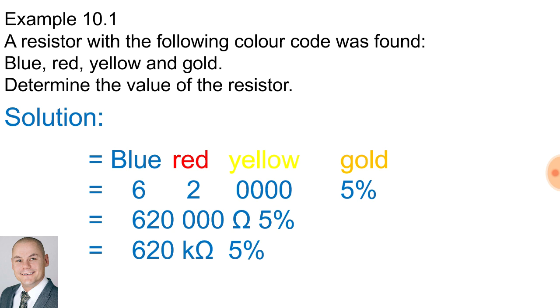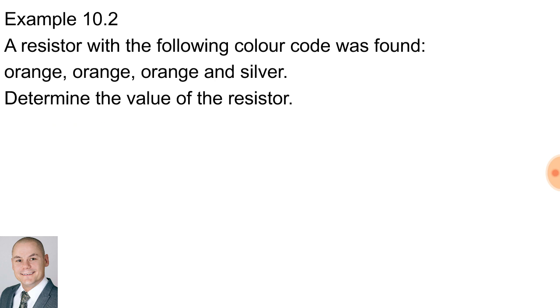Let's have a look at one more example. A resistor with the following color code was found: orange, orange, orange and silver. Let's write down those colors in that sequence. Orange being the first digit, and orange again for the second digit, and the third orange representing the number of zeros, and silver being the tolerance.